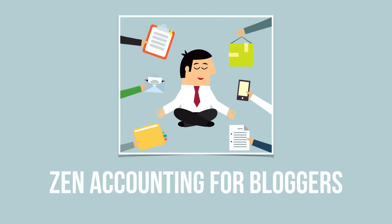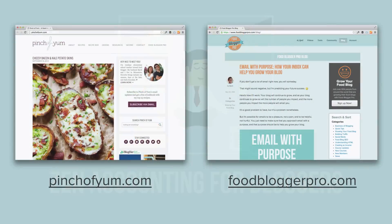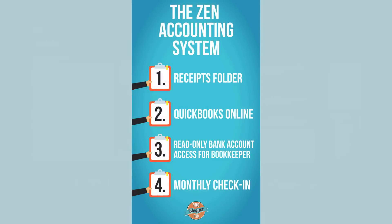Let's talk a little bit about Zen accounting for bloggers. This is the system that we use for both Pinch of Yum and Food Blogger Pro. It's a really simple system and there are four primary steps in this accounting system.